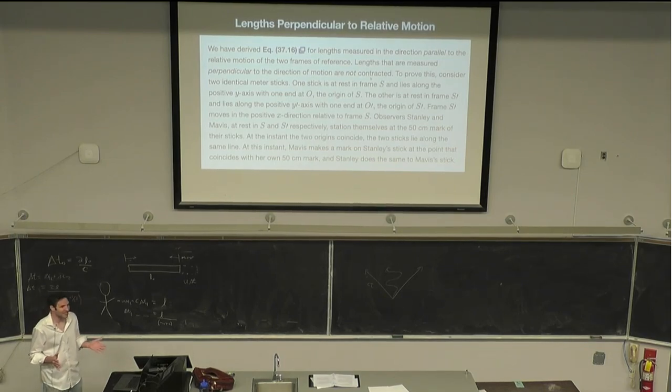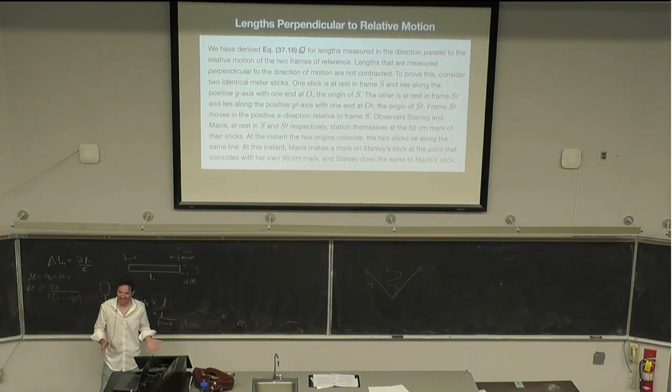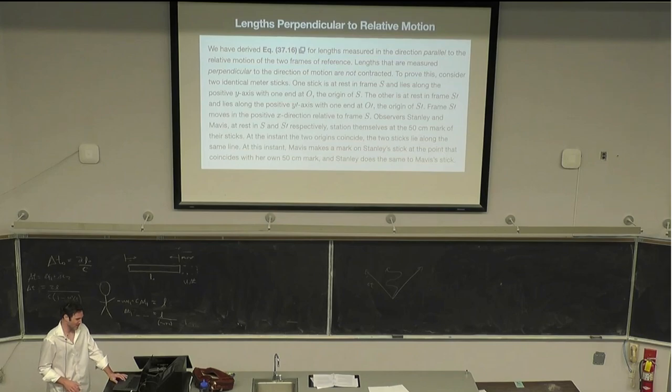So we have a relativity of volume, but that's kind of weird because then we have a relativity of density because density is mass per unit volume. So how do we reconcile that? That's something to think about a little bit.